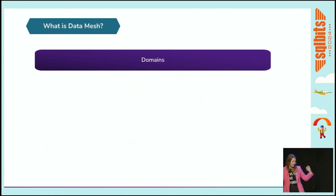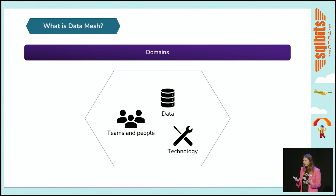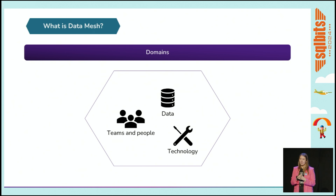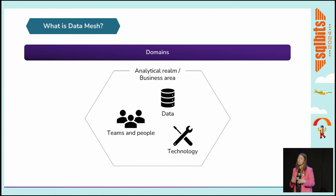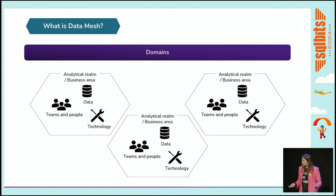In the data mesh world, you have domains. Inside a domain you have teams and people that belong together, data that is connected to that domain, and technology within that domain. Each domain is usually connected to a business domain — it could be marketing, sales, or finance, for instance.